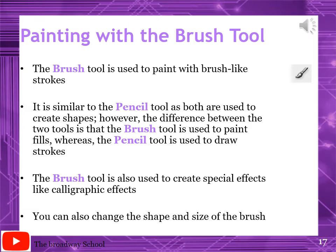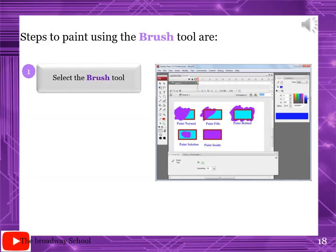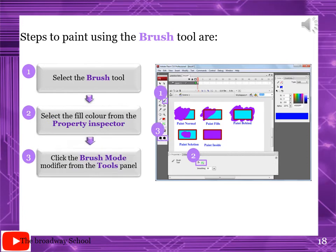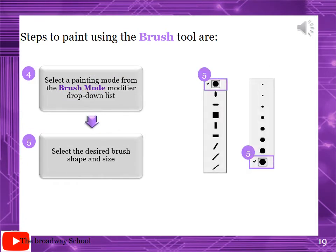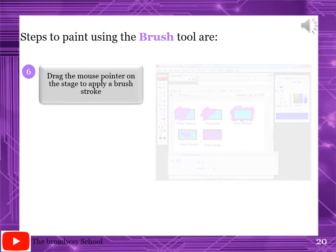The brush tool can also be used to create special effects such as calligraphic effects. You can also change the brush shape and size. Steps to paint using the brush tool: select the brush tool from the drawing tools. Select the fill color from the property inspector. Click the brush mode modifier from the tool panel. Select a painting mode from the brush tool modifier drop-down list. Select the desired brush shape and size, then drag the mouse pointer on the stage to apply a brush stroke.